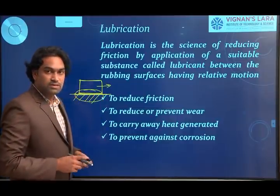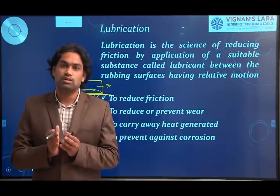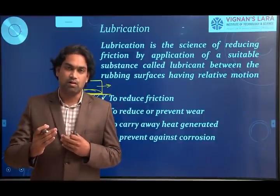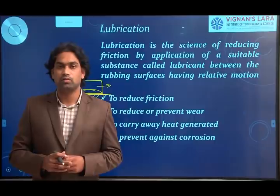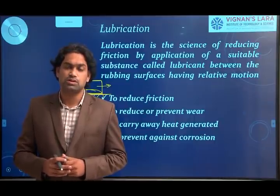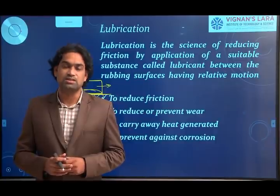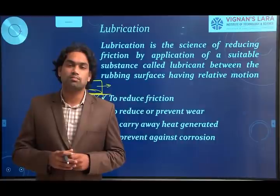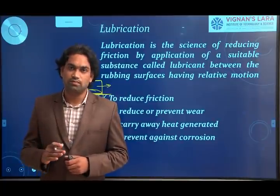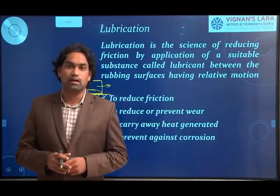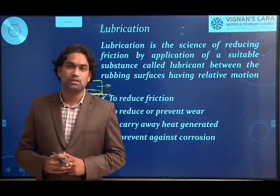The moving machine element and the fixed element are both metals. Whenever there is metal-to-metal contact, there is always a generation of friction. Due to friction, the moving element rotating at higher speeds has a chance of heat generation. To overcome the friction, power is wasted between the two surfaces, so the total power cannot be fully utilized — there is always a reduction in power due to friction between the two surfaces.